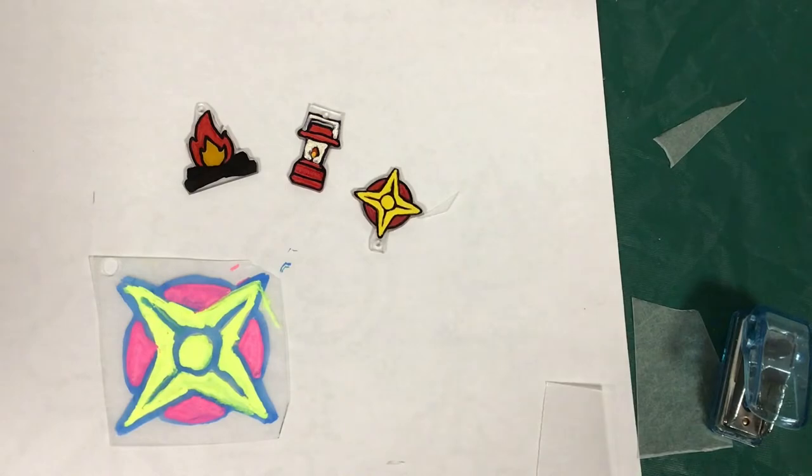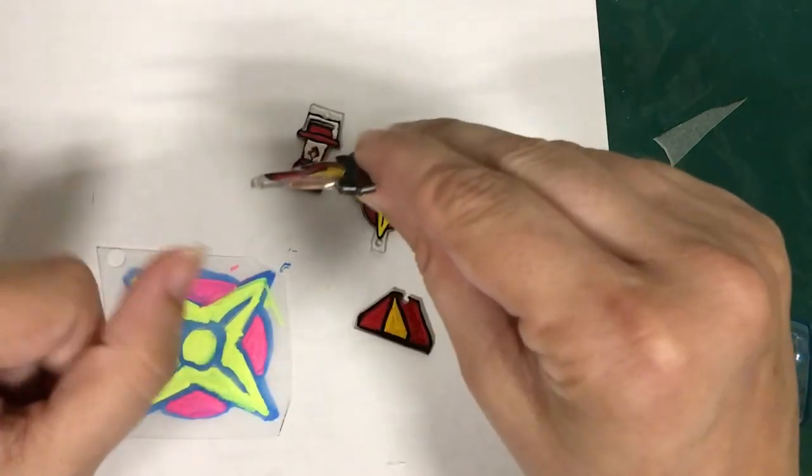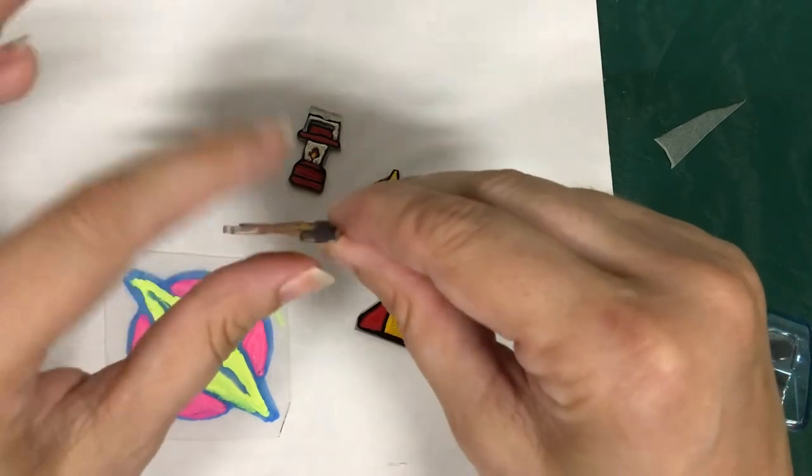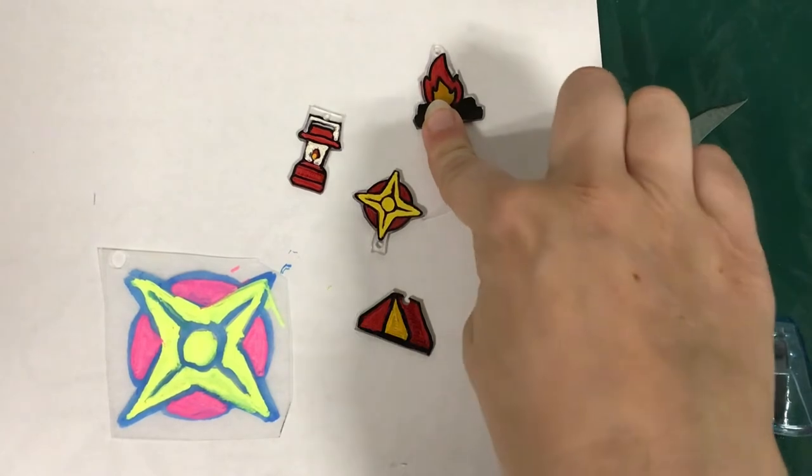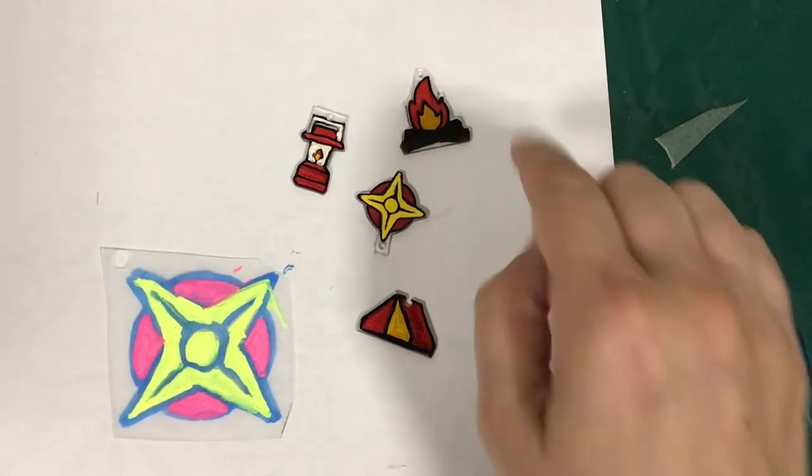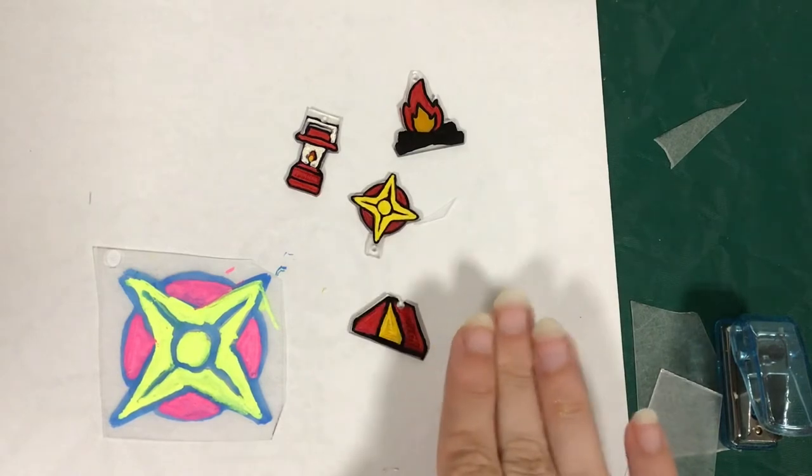And if it's not perfectly flat, you can put it in a little bit longer. You can see this one is a little warpy. But if I put it back in for a little longer, I can kind of push down. Now don't touch these when they come out of the oven. Because even though they're small, they're still getting very hot. So let them cool completely before you pick them up.